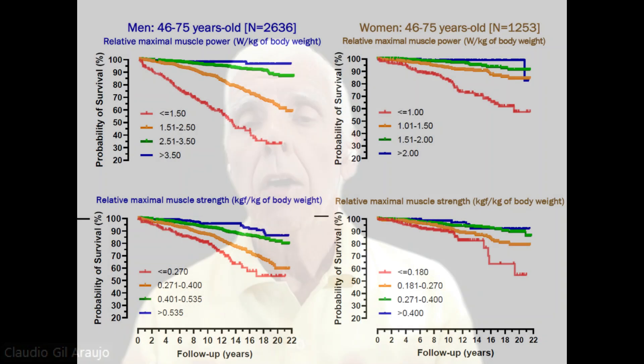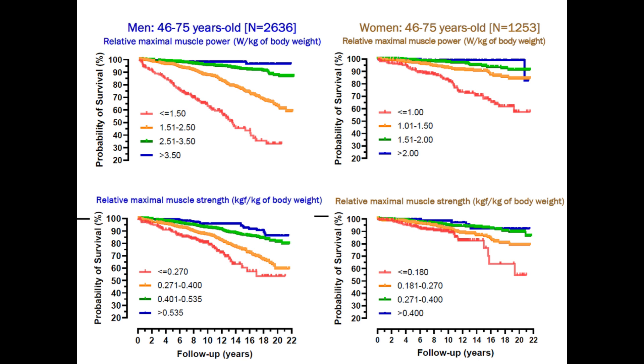With this background in mind, we can now discuss our study. Since we had the chance to evaluate muscle strength and muscle power at each visit, and also had a lot of interesting clinical data on the individuals, we used our Clinimax exercise cohort and selected those aged 46 to 75 years old, men and women. We started data collection in 2001 and ended in 2022 — a 21-year period of study — and we followed them for vital status data.